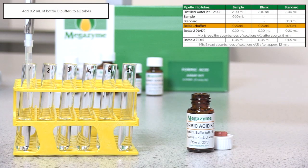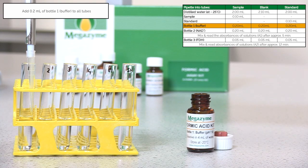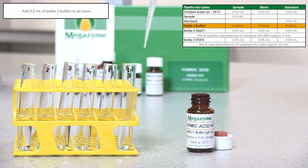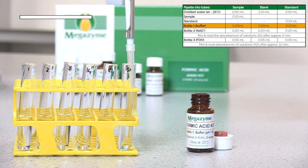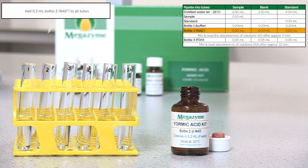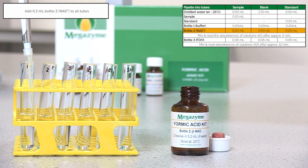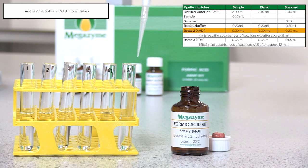Pipette 0.2 ml of bottle 1 buffer into all assay tubes. Pipette 0.2 ml of bottle 2 NAD plus into all assay tubes.